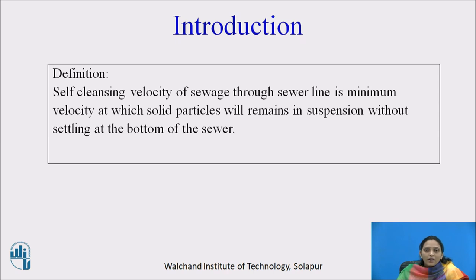That required minimum velocity is called the self-cleansing velocity. It is not necessary that throughout the day, velocity equals self-cleansing velocity. It may be sometimes less, sometimes more, depending on fluctuation in sewage flow. But at least once in a day, the self-cleansing velocity should be achieved.